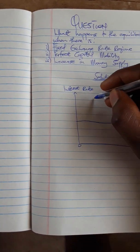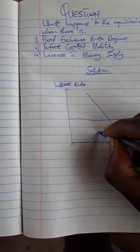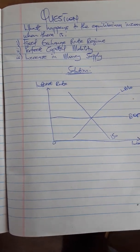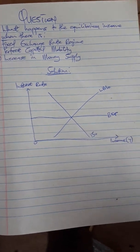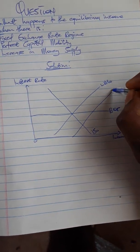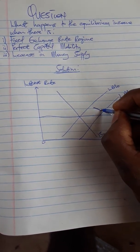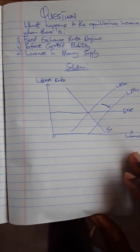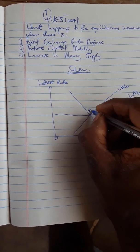Next, we draw our normal IS and LM curves. In the question there is an increase in money supply, and since money supply is a component of LM, the LM curve will shift to the right — we call the new curve LM1, with an arrow indicating the shift. Let's label the first initial equilibrium E-naught, giving us equilibrium income Y-naught.